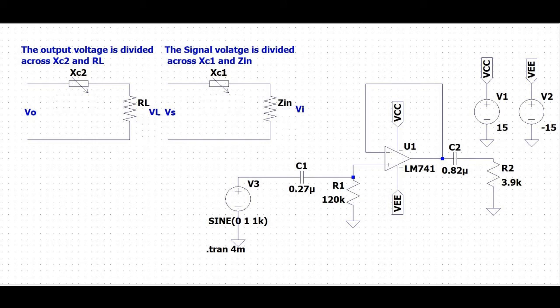A resistor equal to R1 might be included in series with the inverting terminal to equalize the voltage drop. With the output capacitor coupled, small DC offset voltages are blocked by the capacitor.